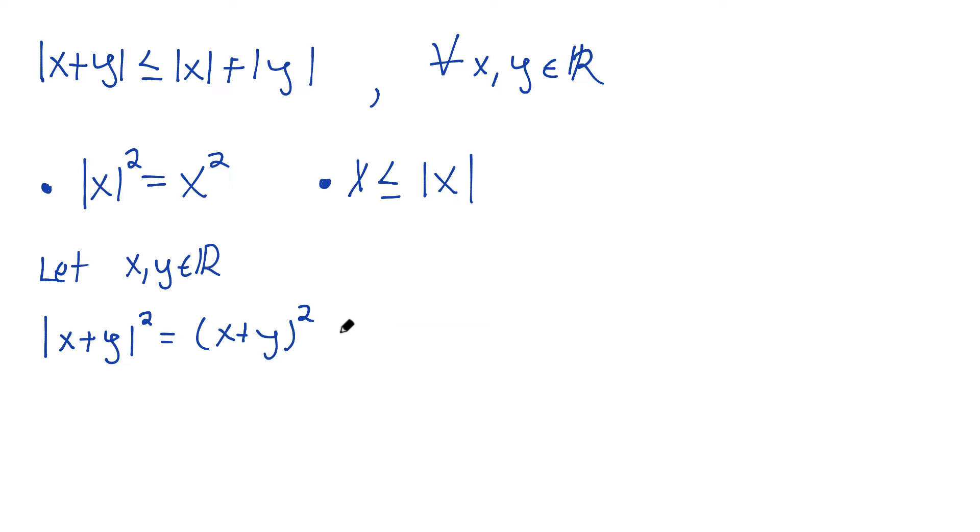Let's just distribute this. Think back to how would you FOIL this, or how would you do this multiplication? We would get (x plus y) times (x plus y). Or you could probably even just skip this step and skip right to x squared plus y squared plus 2xy.